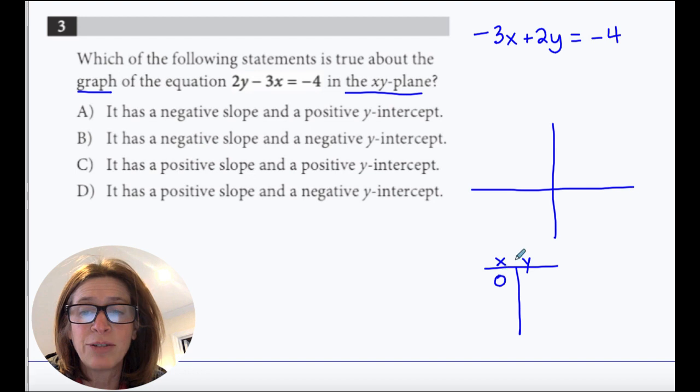So I'm going to get the x-intercept. If x is 0, I'm going to get the y-intercept. So if x is 0, then y becomes negative 2. And if y is 0, then x becomes 4 thirds.